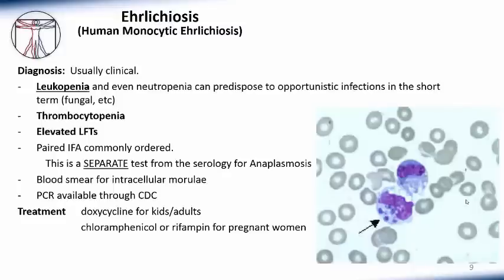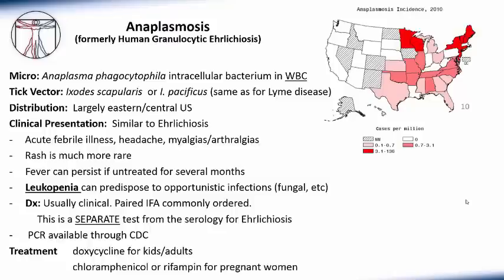Anaplasmosis, formerly called human granulocytic ehrlichiosis, is caused by Anaplasma phagocytophilum, an intracellular bacterium that also lives in leukocytes, similar to ehrlichiosis. However, the tick vector is very different: it's carried by Ixodes scapularis, or Ixodes pacificus in the western United States — the same tick that carries Lyme disease. Importantly, anaplasmosis and Lyme disease can sometimes be co-transmitted, meaning you may be dealing with two illnesses at once.